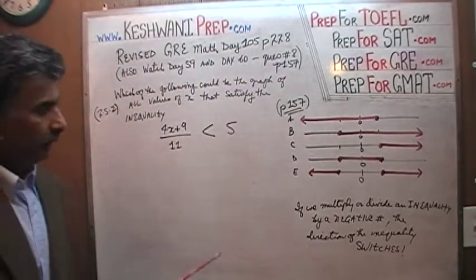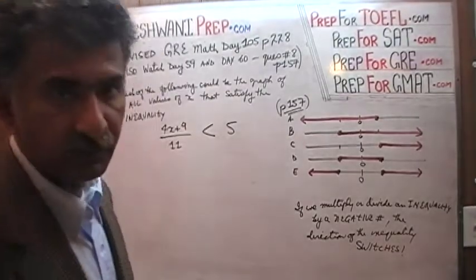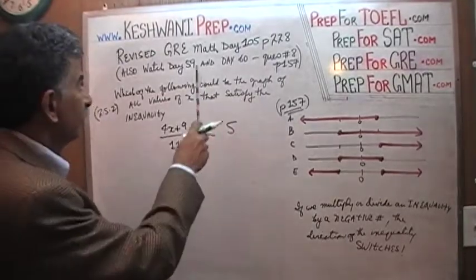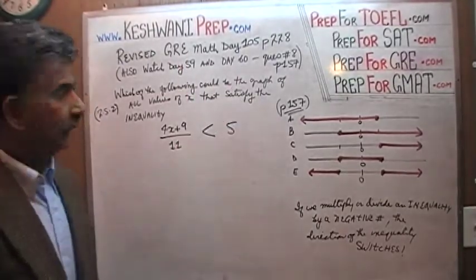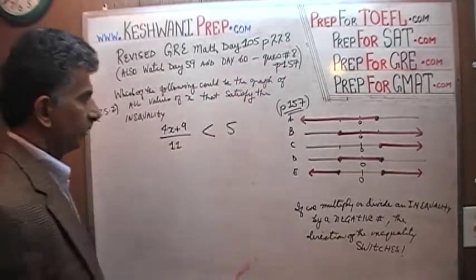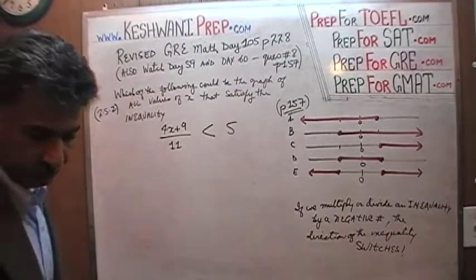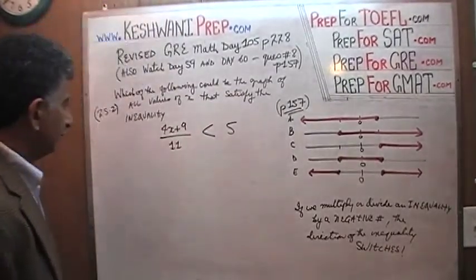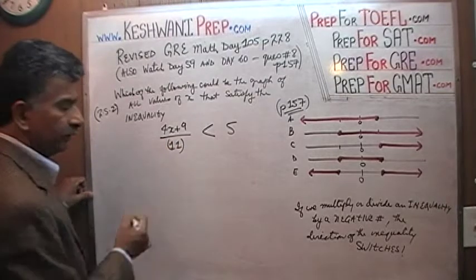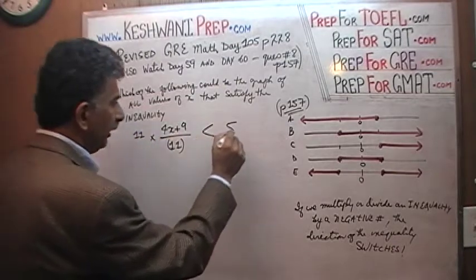We are going to solve the inequality and identify the graph that goes with it — just like we did on day 59 and day 60. The first thing we need to do is get rid of the 11 from the denominator. That's very simple and straightforward: multiply both sides by 11.